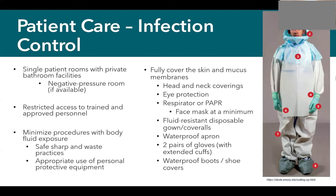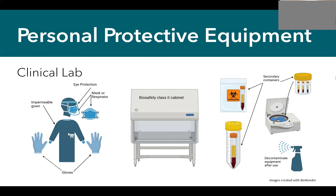Infection control extends beyond the patient to the clinical laboratory. Lab staff may not be familiar with these precautions, yet they risk exposure to blood or aerosolized materials during procedures like centrifugation. Ensure your clinical lab has eye protection, a mask or respirator, an impermeable gown, and gloves. Ideally, perform blood work in a biosafety class 2 cabinet. Use secondary containers for specimens from collection through transfer to the lab, and decontaminate all equipment after use.